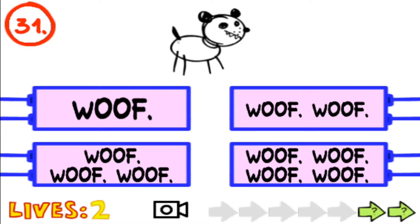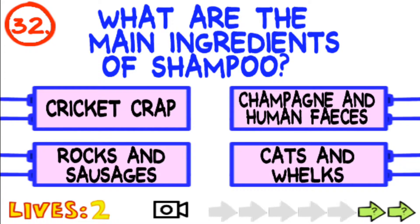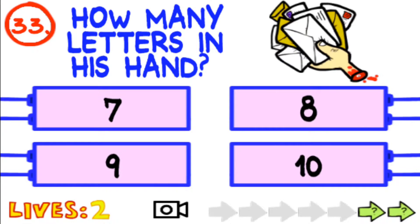Wolf. He said it three times. Okay. What are the main ingredients of shampoo? How many letters in his hand? Wait, there's gonna be like in his hand. H-I-S, so three and four. Three plus four is seven, right? Ha ha.